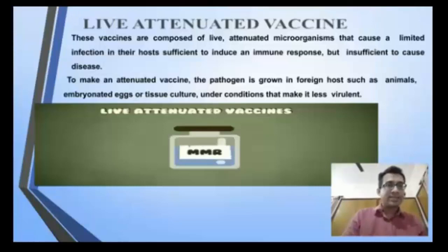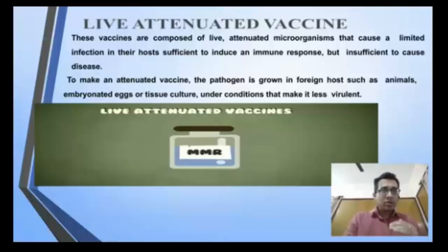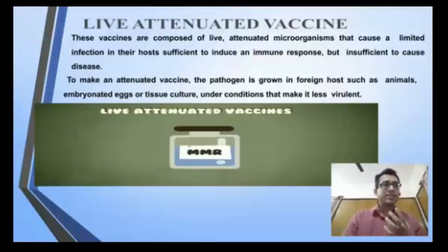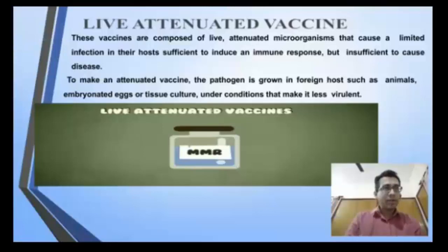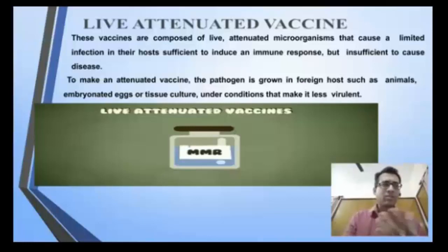Live but attenuated vaccines contain a live pathogen that has been weakened, so infection is insufficient to cause disease but sufficient to induce an immune response. The pathogen is grown in a foreign host such as an animal, embryonated eggs, or tissue culture and then converted to a less virulent form. An example is the MMR vaccine (mumps, measles, rubella).